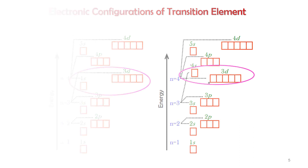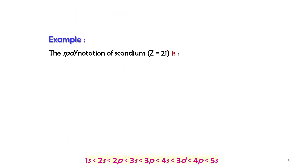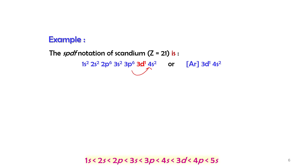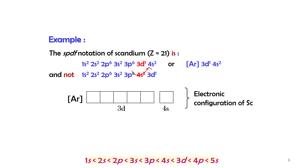For example, scandium with Z=21: the electronic configuration is 1s² 2s² 2p⁶ 3s² 3p⁶, after which electrons fill into 4s, then into 3d. So we write [Ar] 3d¹ 4s². Note: we write 3d¹ before 4s² in the notation, because after filling, filled 3d has lower energy than filled 4s.